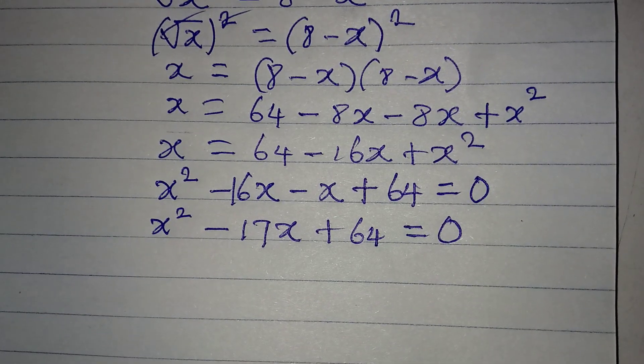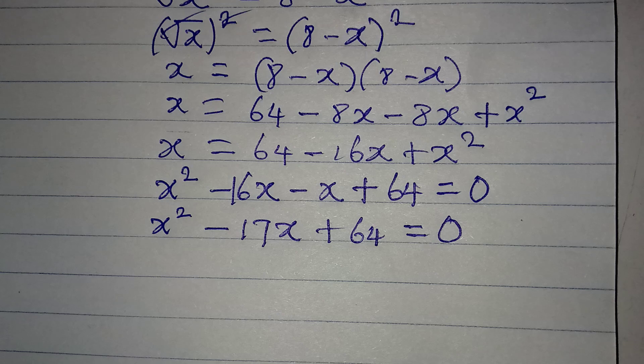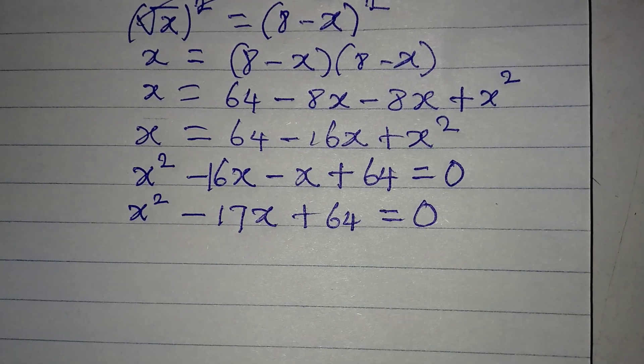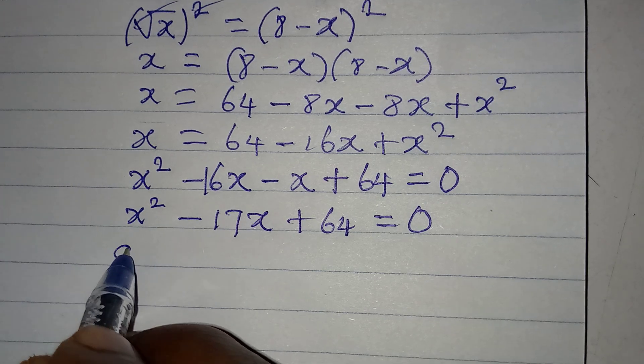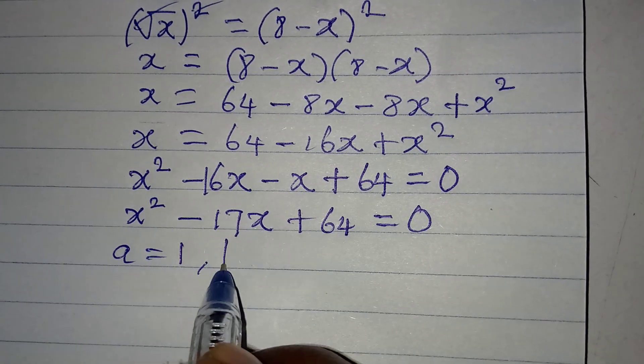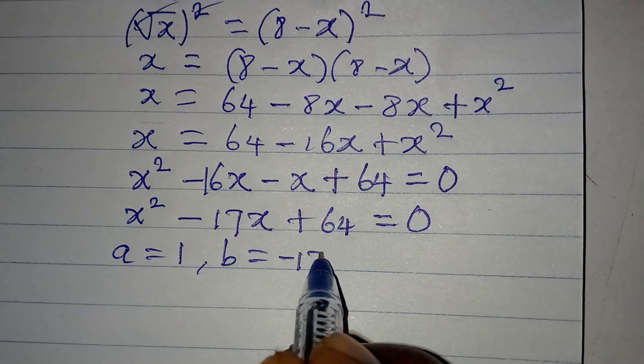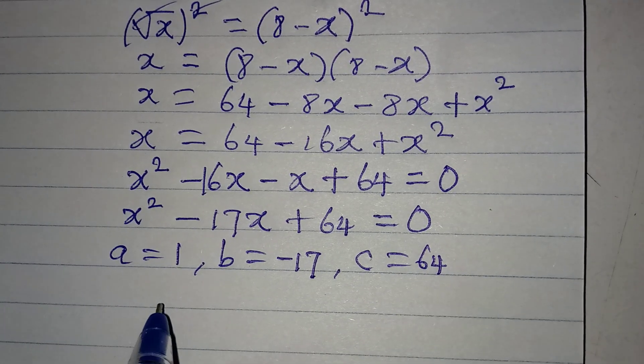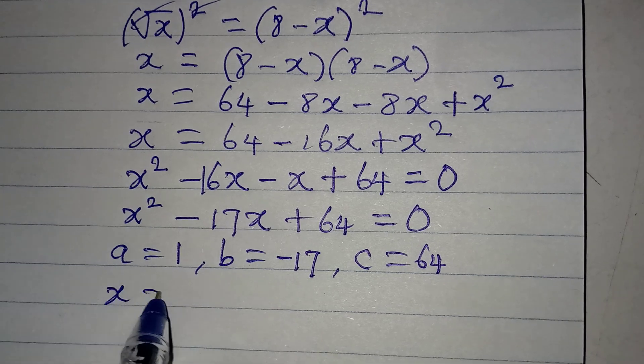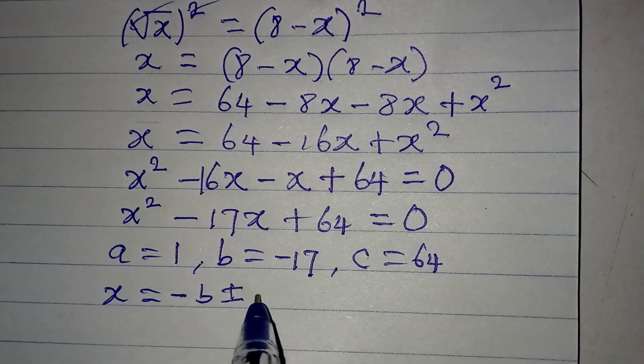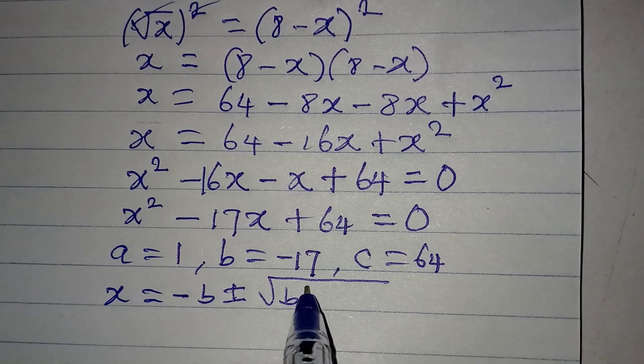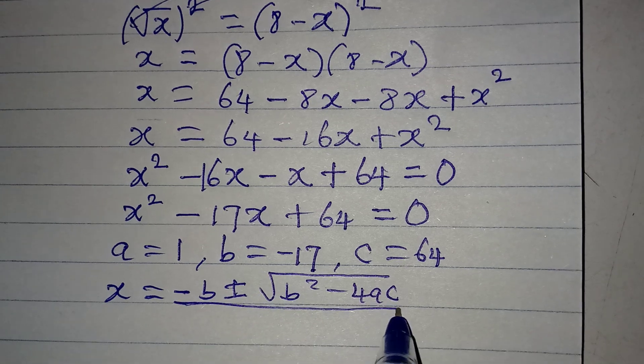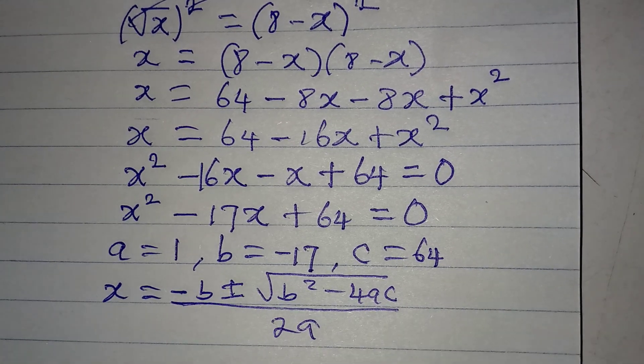Now if we continue, we have x squared minus 17x plus 64 equal to 0. And now the only way we can solve this is let's try to use the formula method. I think it's safer and faster. So from here now, our a will be 1, our b will be minus 17, and c is 64. Now x is equal to minus b, positive or negative, square root of b squared, minus 4ac, and everything is over 2 multiplied by a.